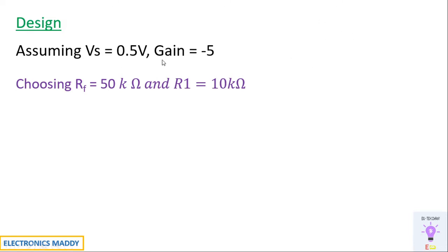So what values do we need to design for an inverting amplifier? If we need a gain of about minus 5, we can choose Rf = 50 kilo-ohm and R1 = 10 kilo-ohm, or choose Rf and R1 such that the ratio Rf/R1 equals 5. The gain is minus Rf/R1 in case of an inverting amplifier, giving a value of minus 5. I am choosing Rf = 50 kilo-ohm and R1 = 10 kilo-ohm.